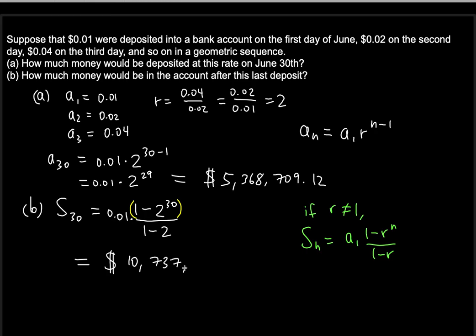So if you do this correctly, you should get this result: $10,737,418.23. And as you can see, this is much more than your deposit on the 30th of June. Your cumulative amount would be way greater, about two times greater than the deposit that you would make on the 30th day itself.